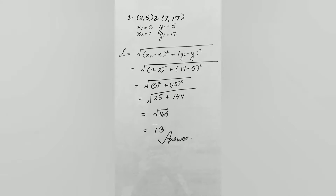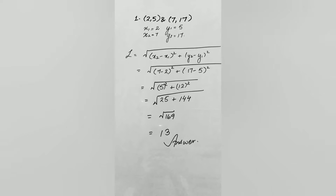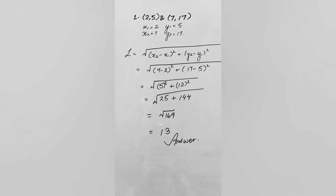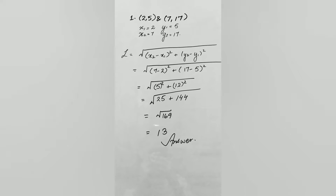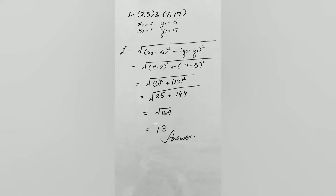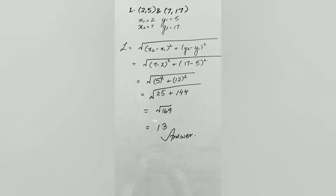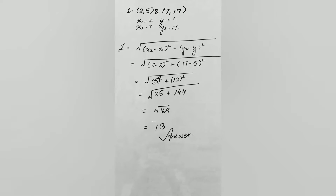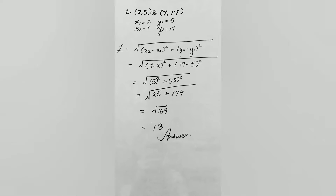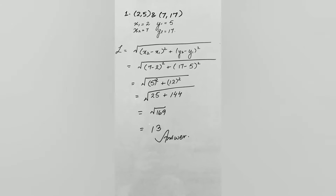Now we will look at some questions in which we have to find out the length of the line segment. The first coordinates are (2, 5) and the second coordinates are (7, 17). Here x1 equals 2, x2 equals 7, y1 equals 5, and y2 equals 17. By putting these values into the formula — under root of (x2 minus x1) squared plus (y2 minus y1) squared — we get root of (7 minus 2) squared plus (17 minus 5) squared, which gives root 169, and the answer comes out as 13.